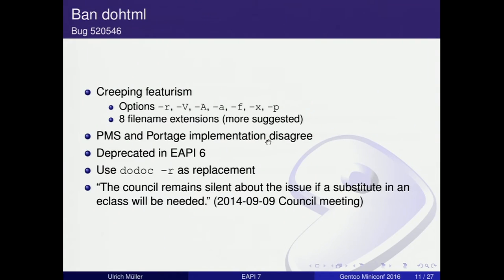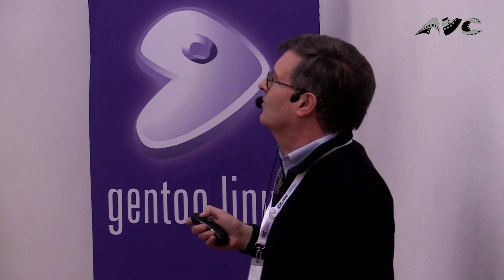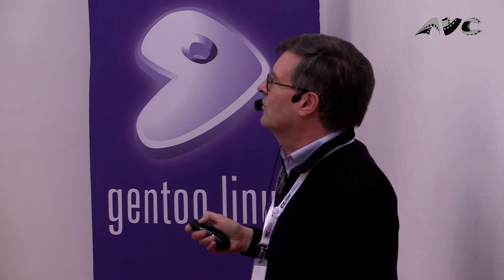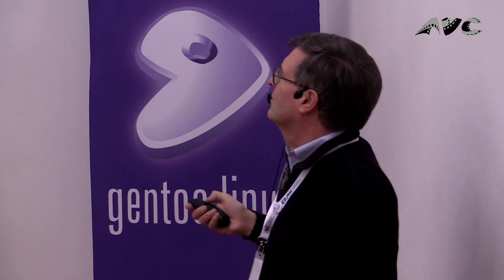And dohtml. Most of the audience should be devs — can anyone tell me what those seven options do, or what those eight filename extensions are? They're just more filename extensions: HTML, .gif, and whatever. This doesn't really fit into any of the other do functions, and PMS and Portage don't have the same behavior there. It's a council decision to remove this with the next eAPI and use doDoc -r as a replacement. The council remains silent about whether a substitute in an eClass will be needed, so if anyone wants to do this in an eClass instead, just go ahead.